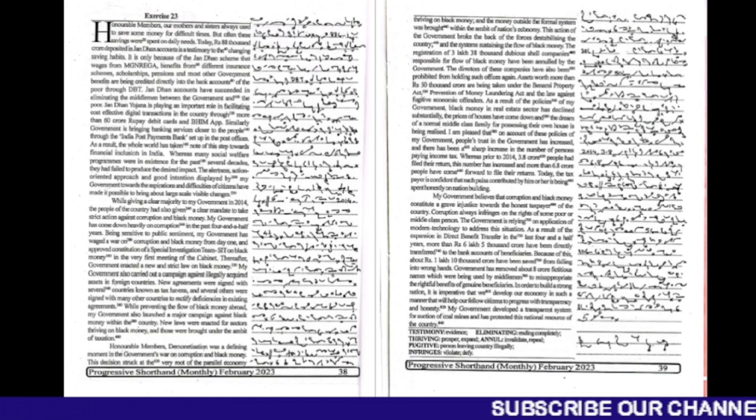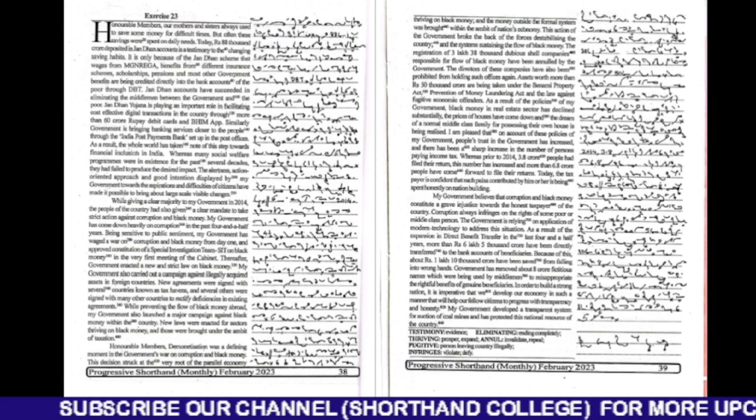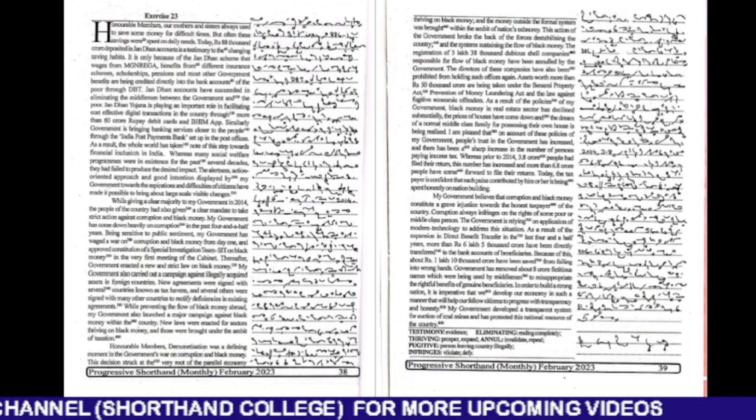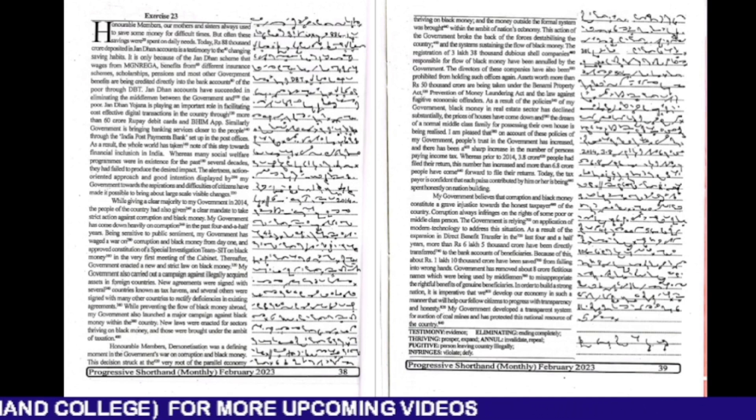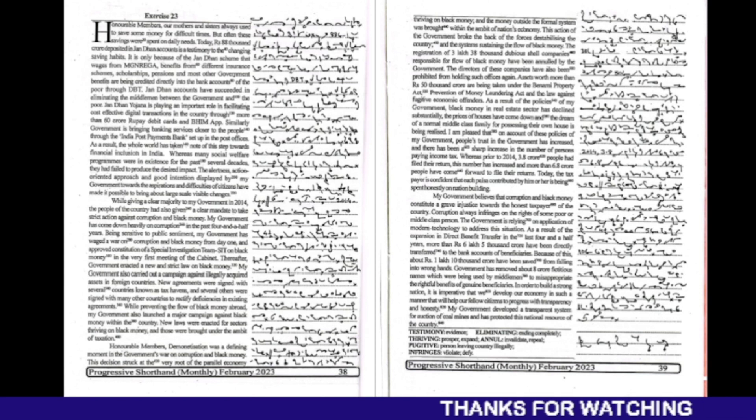It is only because of the Jandan scheme that wages from Manrega, benefits from different insurance schemes, scholarships, pensions and most other government benefits are being credited directly into the bank accounts of the poor through DBT. Jandan accounts have succeeded in eliminating the middlemen between the government and the poor.